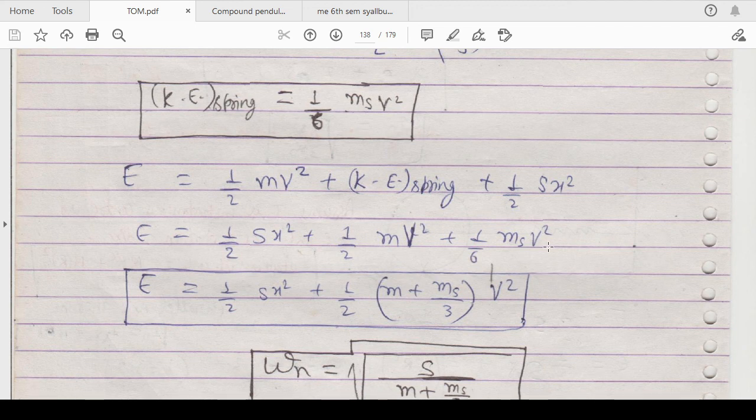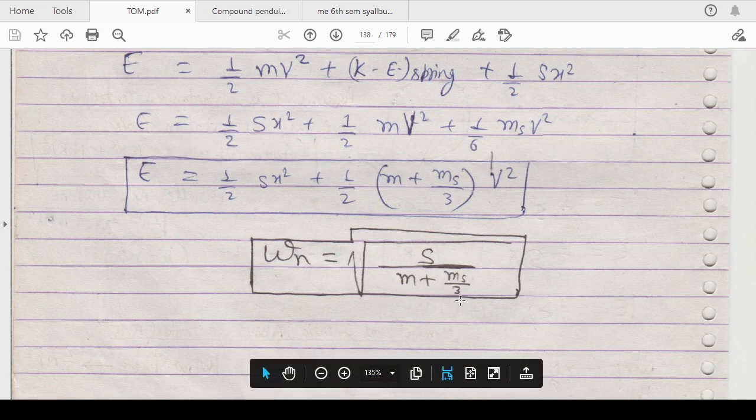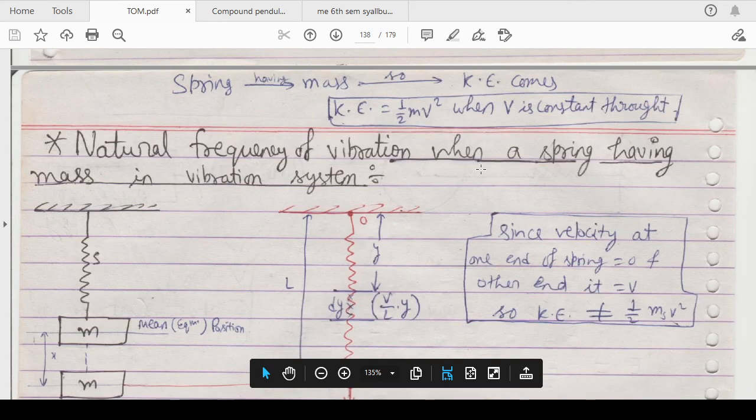The kinetic energy in the spring is due to the mass of the spring. Energy will be equals to half sx squared plus 1/2 times m, but now it is m plus ms/3. If you differentiate it and equate it to zero, you will get the value of angular velocity omega n, which equals square root of s divided by m plus ms/3. This is the angular velocity when considering a spring having mass in the vibration system.